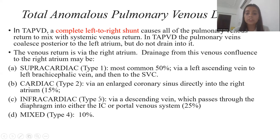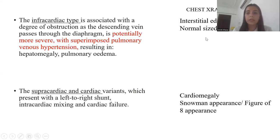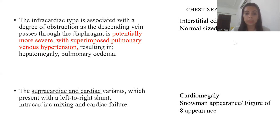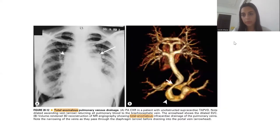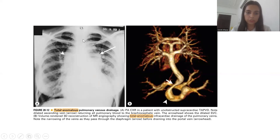Type 3 is infracardiac, in which drainage is via a descending vein which passes through the diaphragm, either into the inferior vena cava or into the portal venous system. The infracardiac type is associated with a degree of obstruction as the descending vein passes through the diaphragm, and is potentially more severe, with superimposed pulmonary venous hypertension — resulting in hepatomegaly and pulmonary edema. On chest x-ray, we see a normal-sized heart but interstitial edema. In the supracardiac and cardiac variants, which present with left-to-right shunt, intracardiac mixing, and cardiac failure, chest x-ray findings include cardiomegaly and snowman appearance, also called figure-of-8 appearance — as seen in the chest x-ray PA view shown.